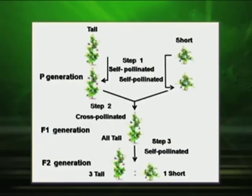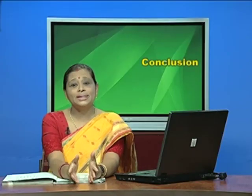Now, you must have a question in your mind — what after all is a monohybrid, and why is it called a monohybrid cross? Mono means one, meaning a cross between two plants differing in one character. Here the one character is the stem height — that is, tall and short.